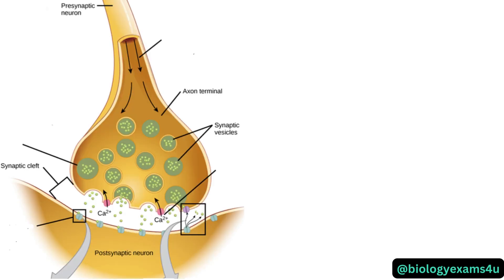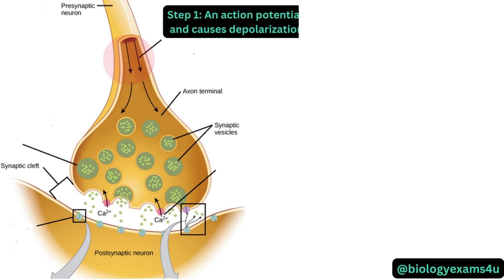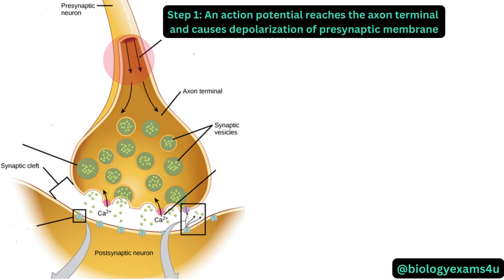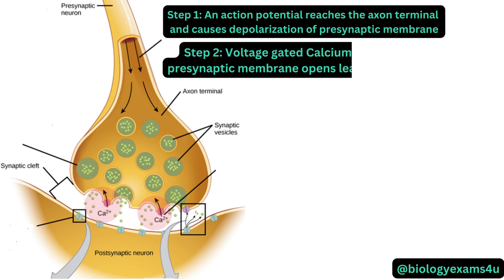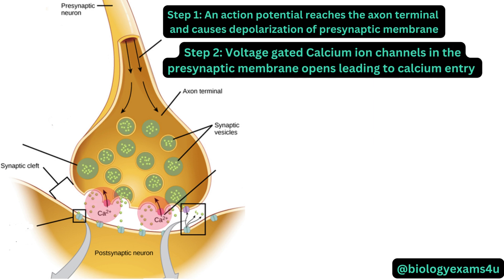Now let us understand the steps involved in synaptic transmission. Step 1: an action potential reaches the axon terminal and causes depolarization of the presynaptic membrane. Step 2: voltage-gated calcium ion channels in the presynaptic membrane open, leading to calcium entry or influx.